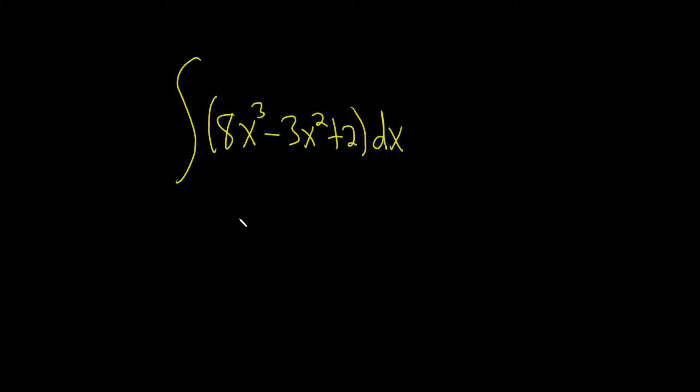Integrate 8x cubed minus 3x squared plus 2. So to do this problem, we're just going to integrate each piece at a time, and we're going to use the power rule.